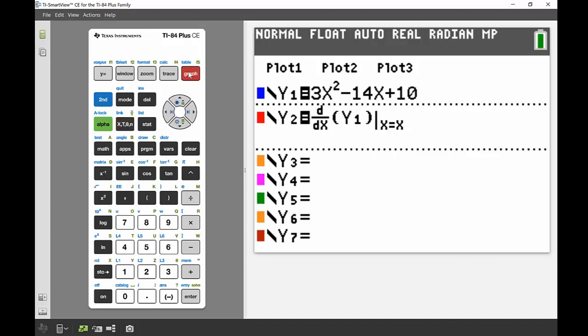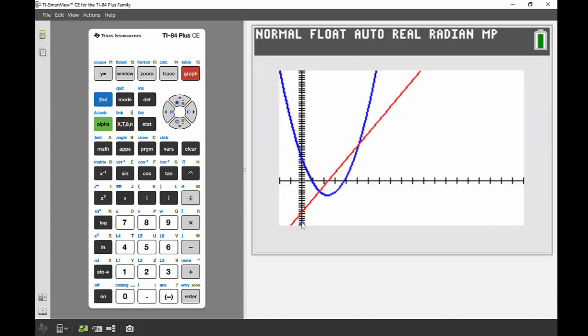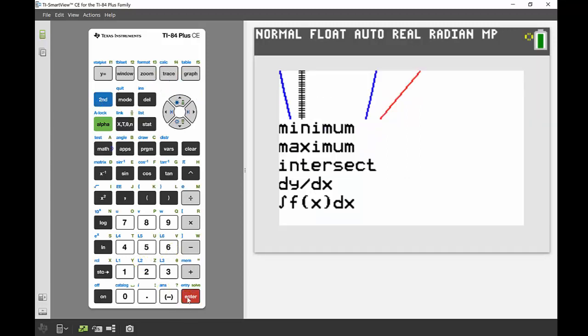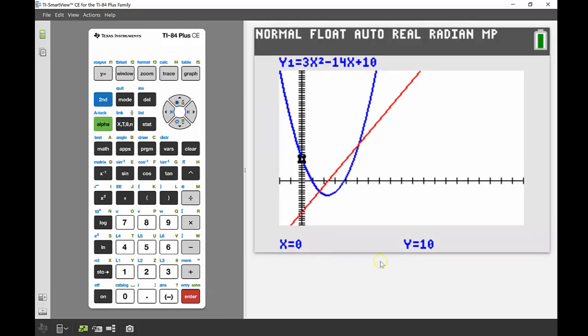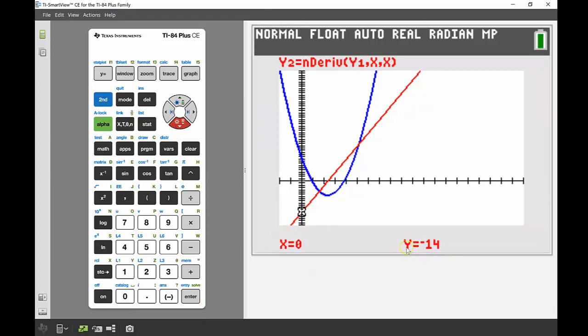So now when I sketch my graph, I can see that's my derivative function there. Say I wanted to just confirm that was negative 14 at that initial condition, my initial acceleration. Second trace, bring up calc, I'm going to find my value at x equals 0. It's going to initially tell me my y1, but I want to have a look at my y2. There's my derivative and I can see my initial acceleration at time zero, my acceleration is negative 14.